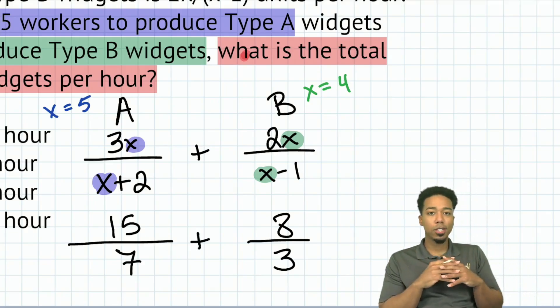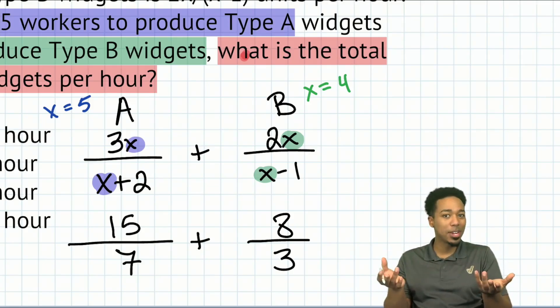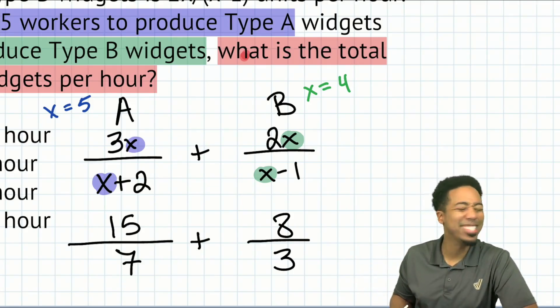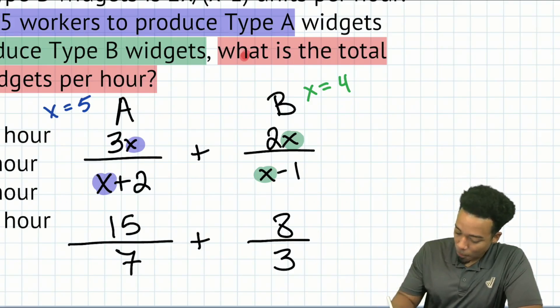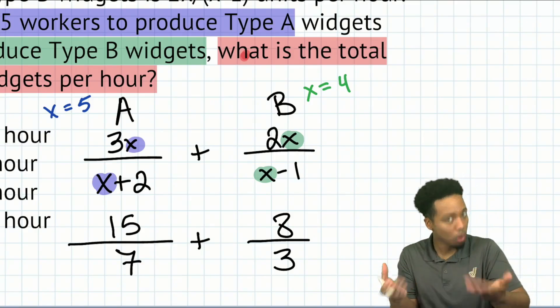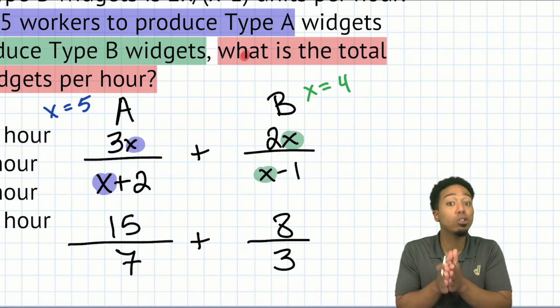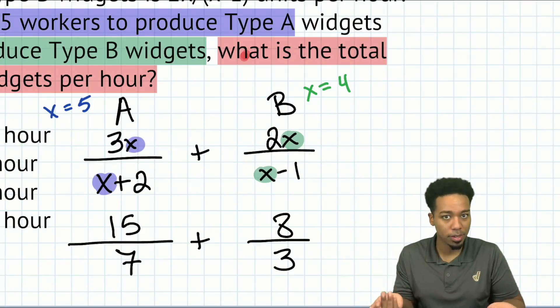So now that we're here, doesn't this seem a lot easier? Now we're just adding two fractions. So let's go ahead and figure out what the least common denominator is so we can move forward nice and easy. So here we have seven and three in our denominators. What's the least common denominator between them or least common multiple? Well, seven and three don't share any factors, so we can just multiply them together to get 21. And there we go.